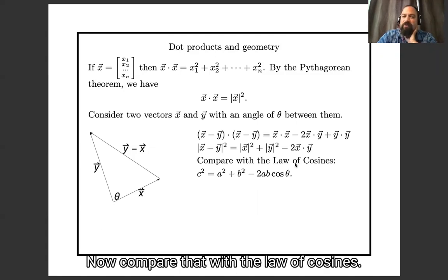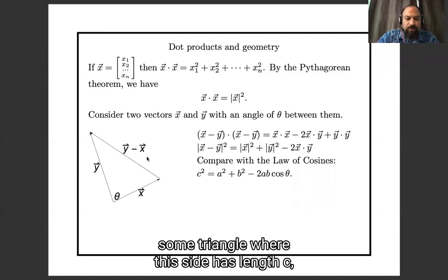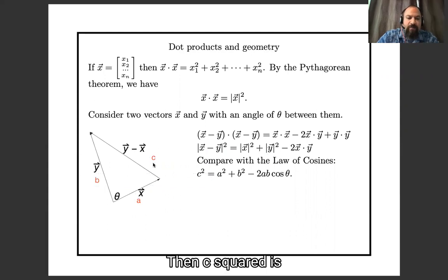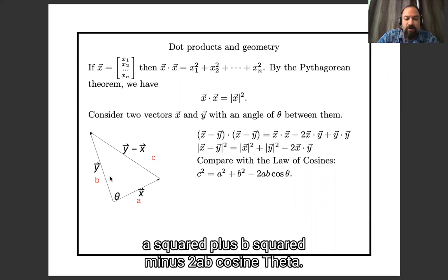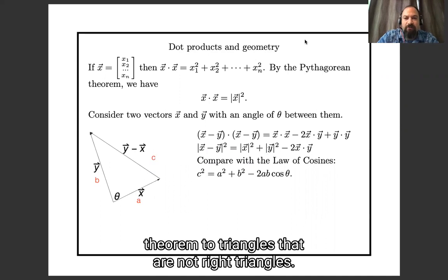Now, compare that with the law of cosines. The law of cosines tells us that if we have some triangle, where this side has length c, this side has length a, this side has length b, then c squared is a squared plus b squared minus 2ab cosine theta. It's a generalization of the Pythagorean theorem to triangles which are not right triangles.